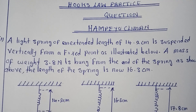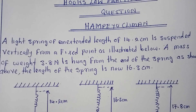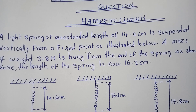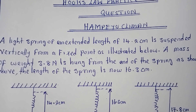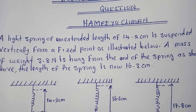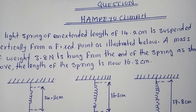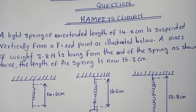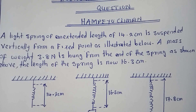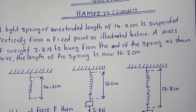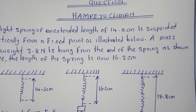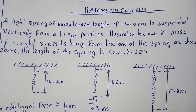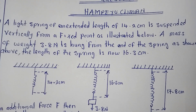Without wasting much time, the question is saying: a light spring of an extended length of 14.2 centimeters is suspended vertically from a fixed point as illustrated. A mass of weight 3.8 newtons is hung from the end of the spring. The length of the spring is now 16.3 centimeters. So when that object was hung to the spring, we have been taught that there was an extension.